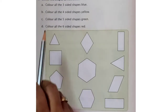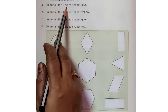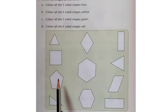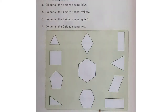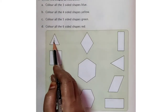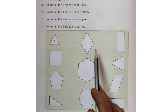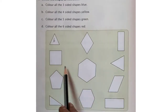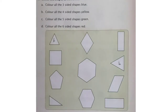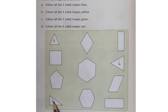Now, let us start. Colour all the three-sided shapes blue. Find out how many three-sided figures are there. So, first one here, triangle — three-sided, blue. This is four sides. Here is one more triangle blue. And here is one more triangle blue. Only three triangles we find — only three-sided shapes.